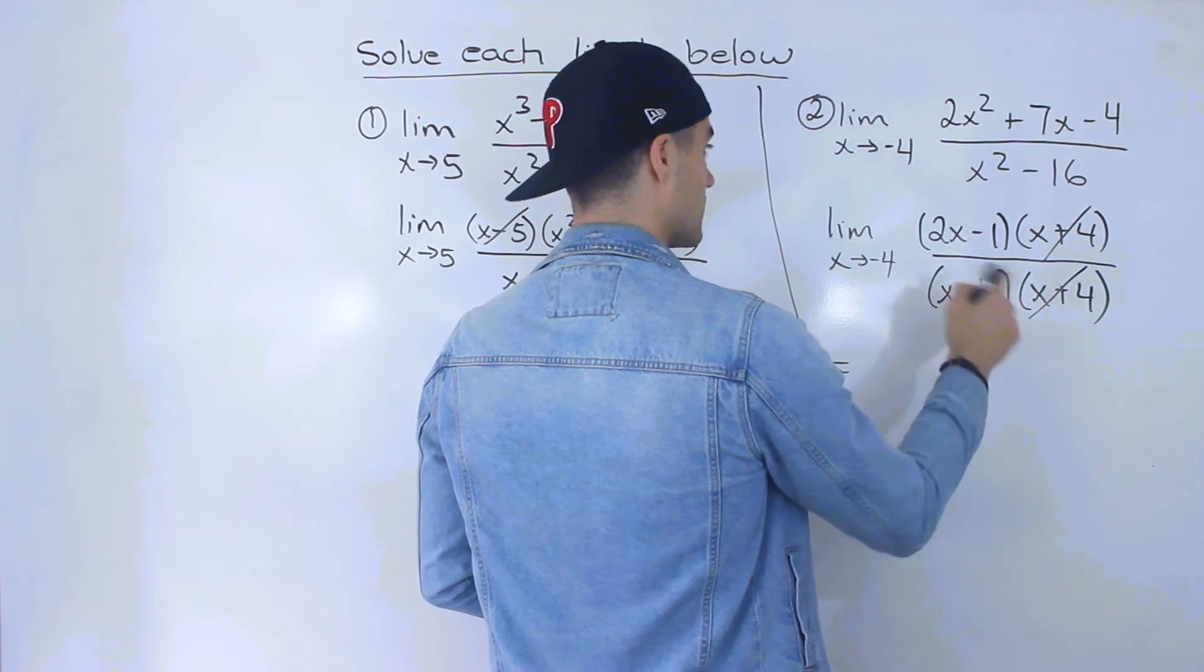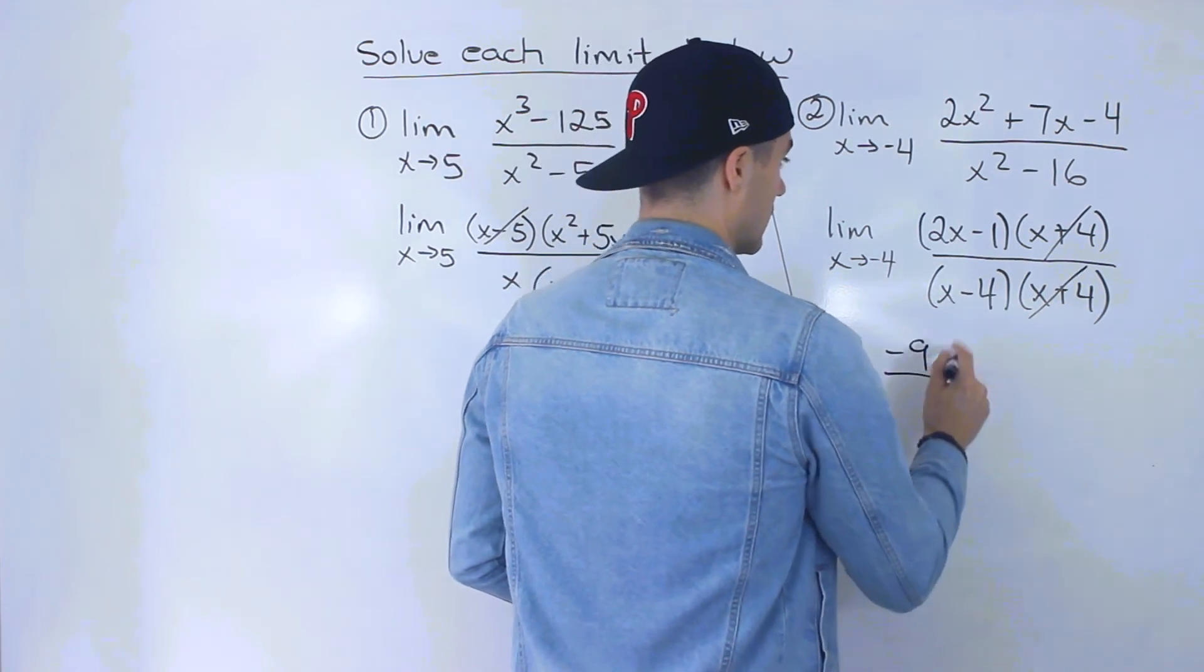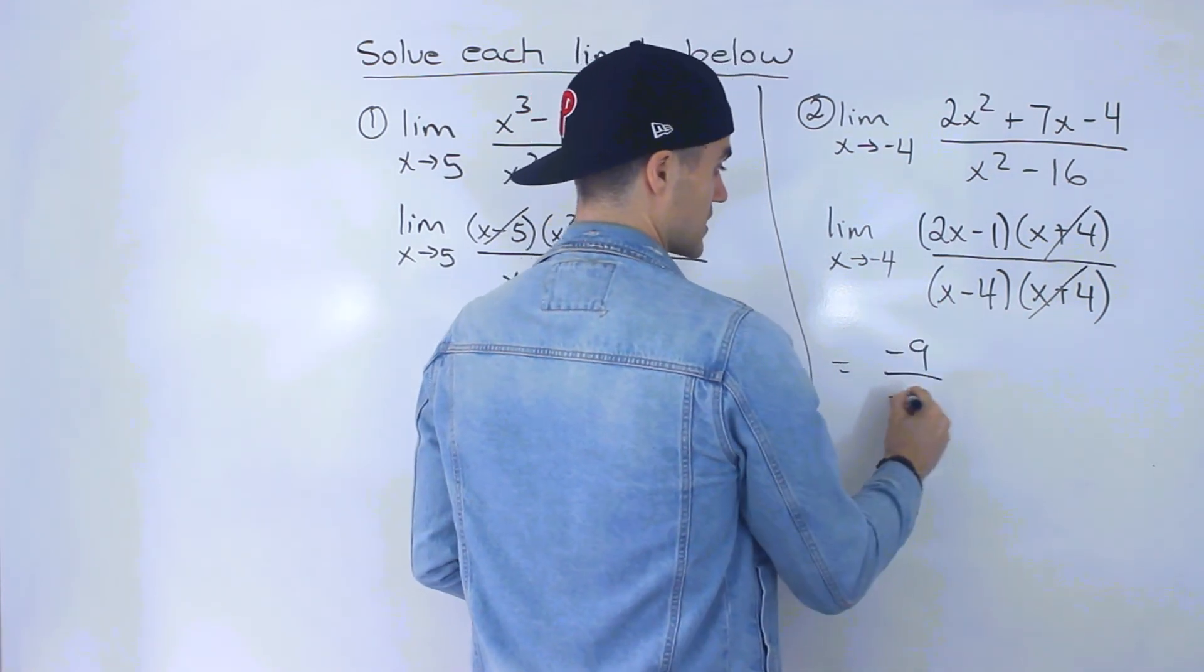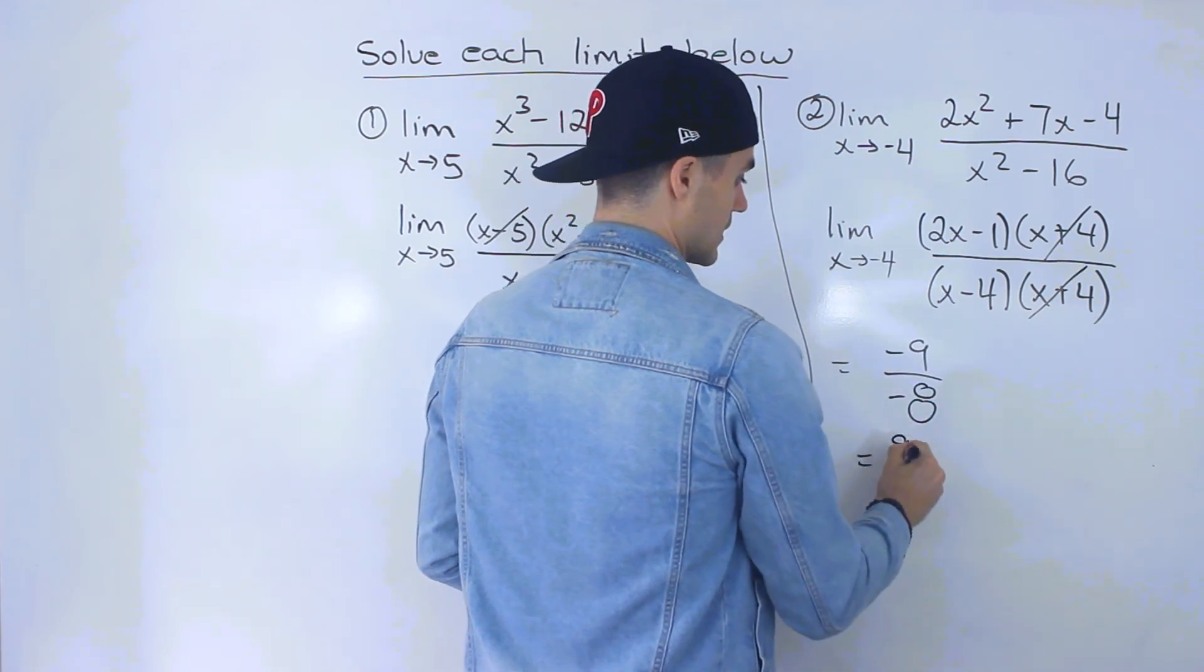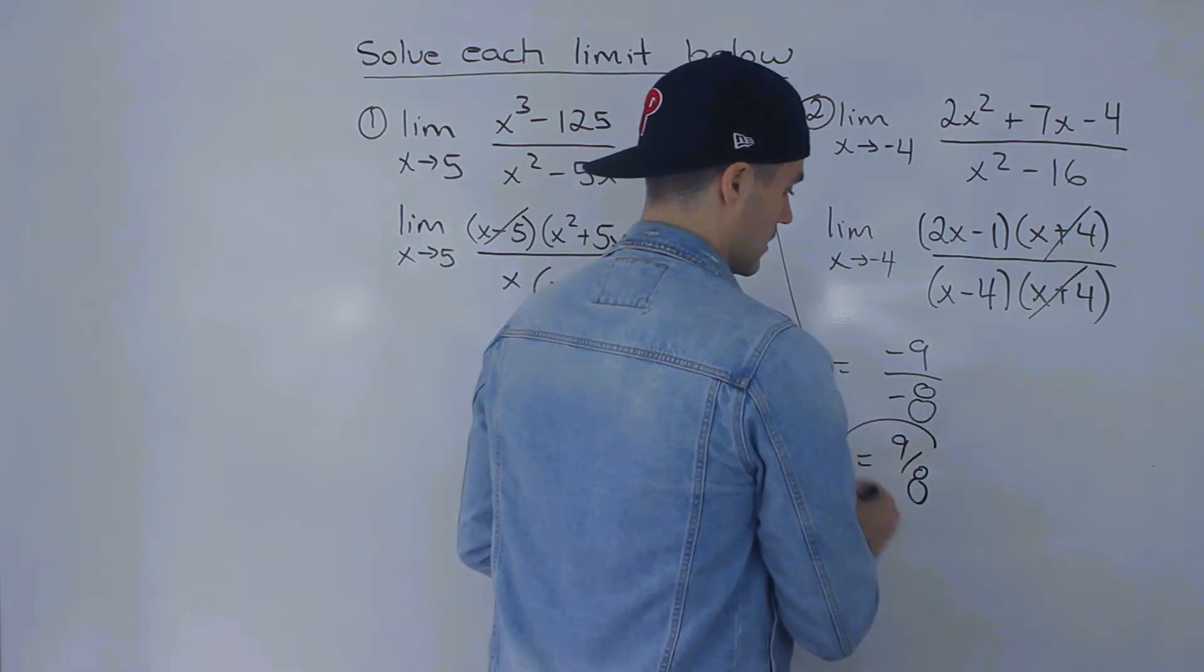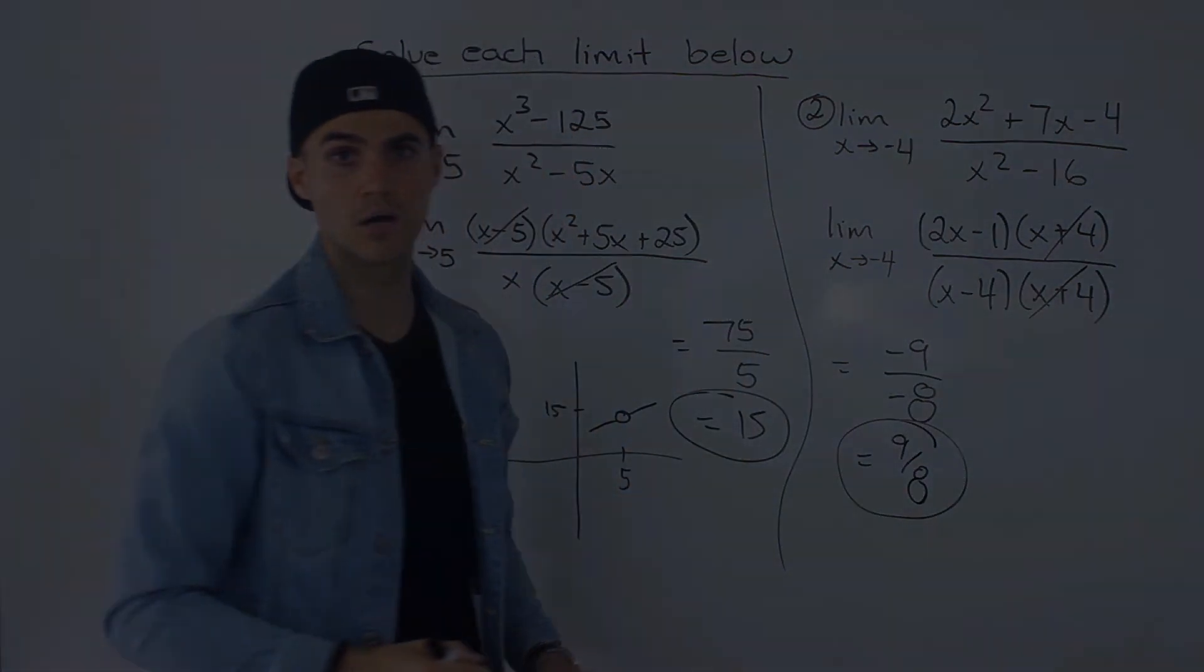2 times negative 4 is negative 8 minus 1 is negative 9. And then negative 4 minus 4 is negative 8. And then notice the negatives cancel out. So we've got 9 over 8. So that is the answer to number 2.